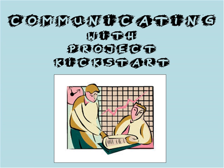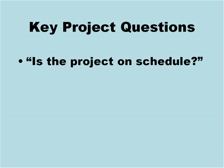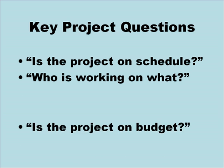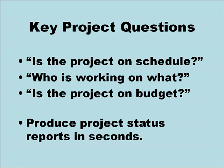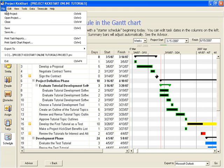But of all the communications tools, Project Kickstart's reports are the most used because they answer the most popular project questions: Is the project on schedule? Who is working on what? And is the project on budget? Reporting project status can often be a chore, but Project Kickstart's reports are so easy to produce that they can be done in seconds. Here, in the file menu, are commands that print task reports and print Gantt chart reports.